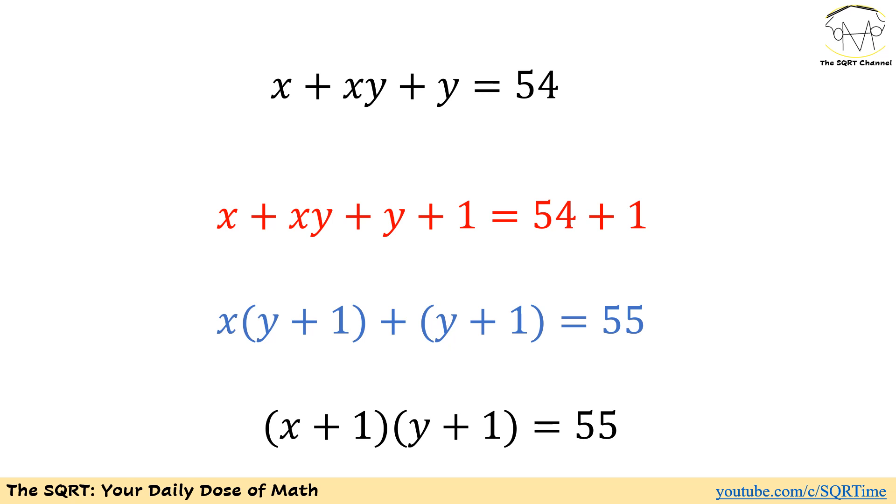If we do this, for the first two terms in this expression, we can factor out x and then we will have x times y plus 1 plus the rest of the expression that we have, which is y plus 1. Now, you can see that we can factor out y plus 1 and then we will find out y plus 1 times x plus 1 for the left hand side of this expression.